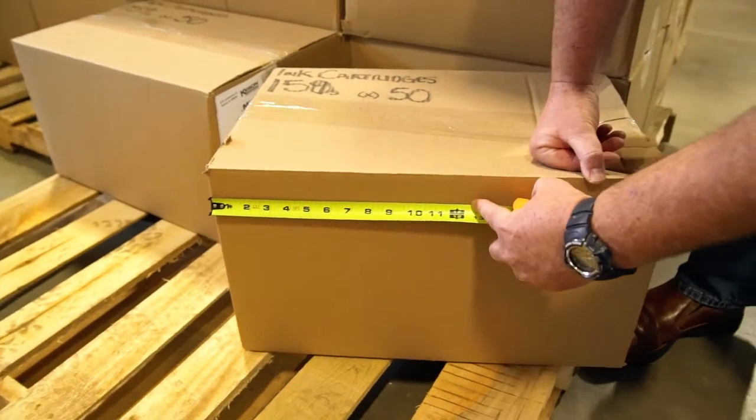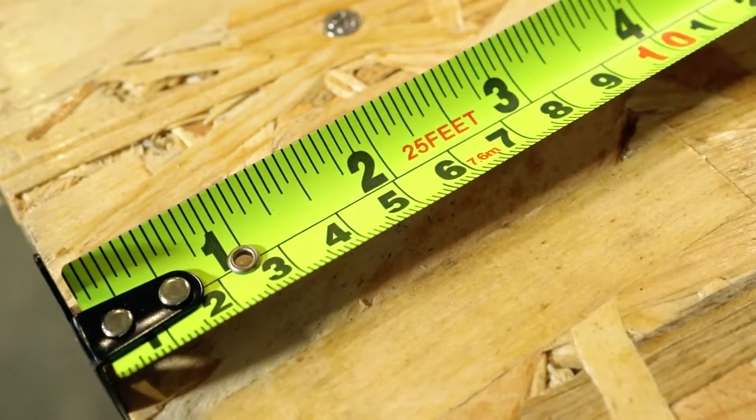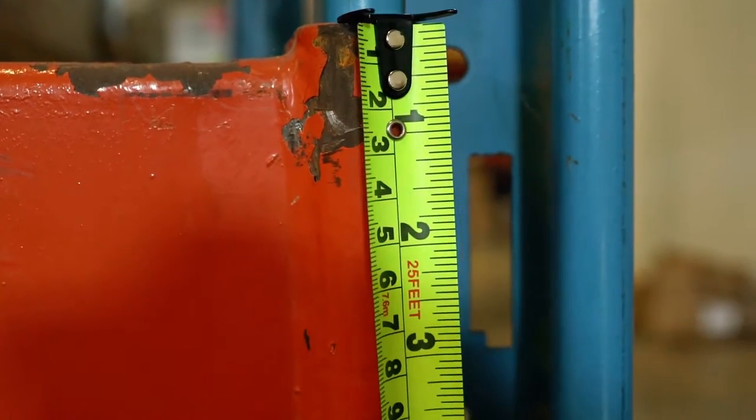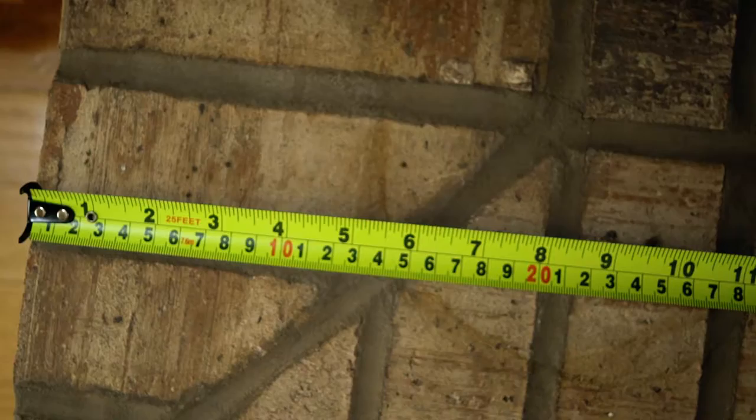Our single unit offerings are standard feet and inches. We also have tapes that are available with two scales printed on one side of the blade. These are our dual scale measuring tapes.